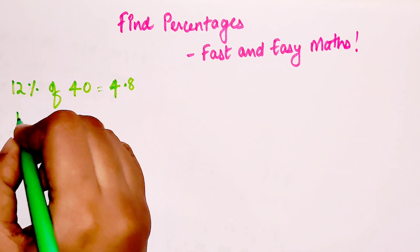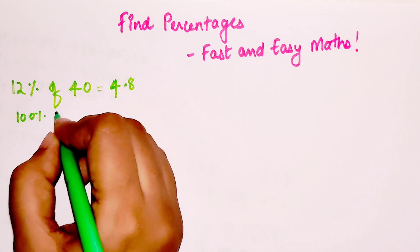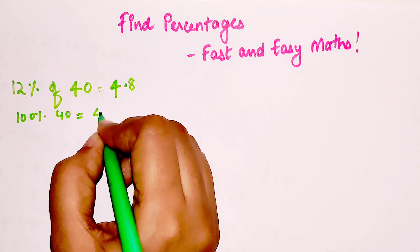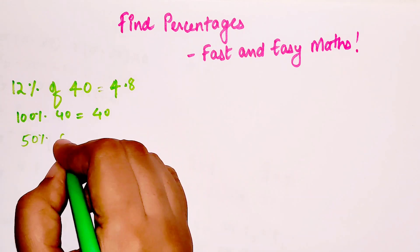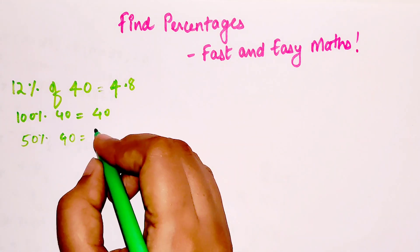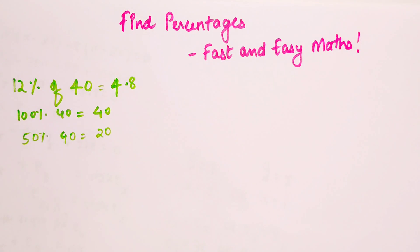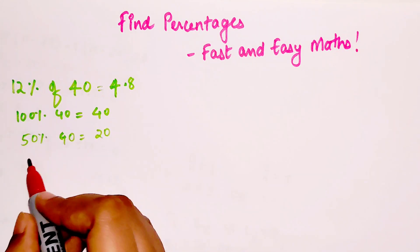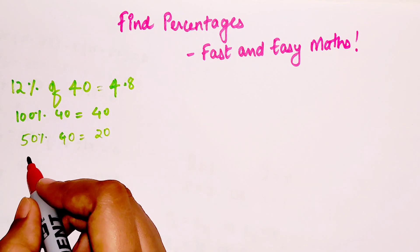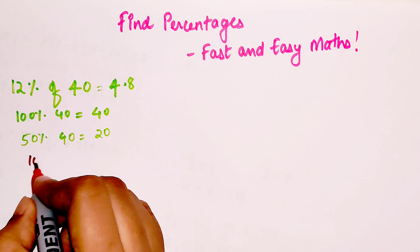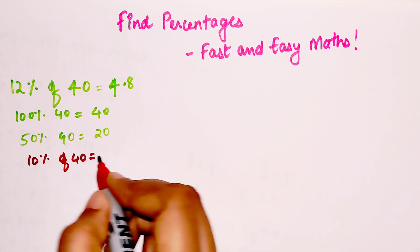But how did I do this orally? It's very simple. Please understand, 12% of 40. If I wanted to find 100% of 40, it would be 40 itself. Similarly, 50% of 40 would be 20.